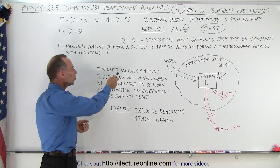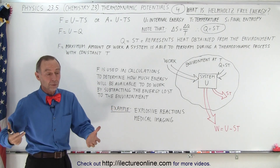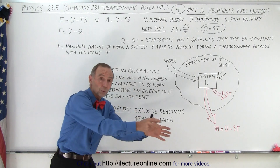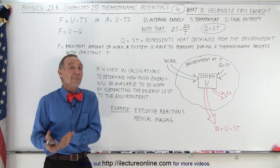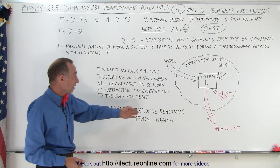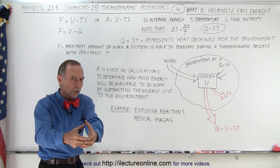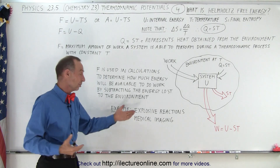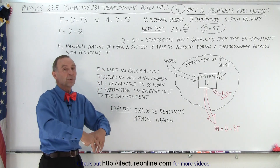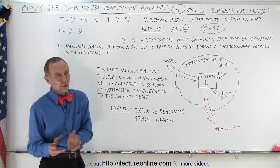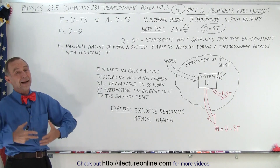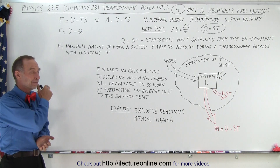What do we use it for? It's used in calculations to determine how much energy is available. When we have some sort of reaction or process, not all of the available energy is really available to do work — some of it is going to be lost to the environment. For example, in an explosive reaction, how much of the explosion actually does work versus how much is lost to the environment? Or in medical imaging, not all of the machine's energy goes into the imaging — some is lost to the environment. Helmholtz free energy tells us the proportion actually available: internal energy minus whatever is lost to the environment.